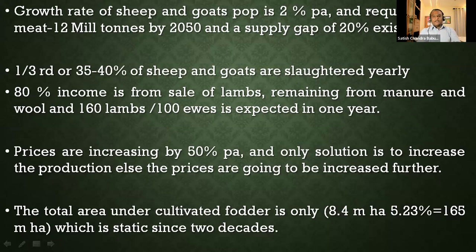Prices are increasing by almost 50 percent for mutton and chevon, and right now the cost is around 700 rupees per kg. The only solution is to increase production of small ruminants and increase the meat supply, otherwise prices will keep rising. One reason we are unable to do well is that the land under water is static from the last 20 years.